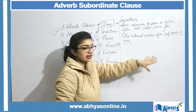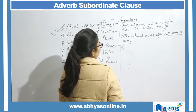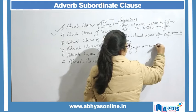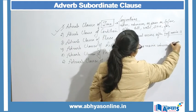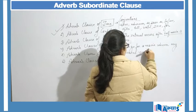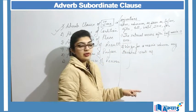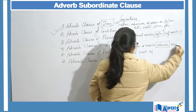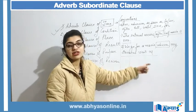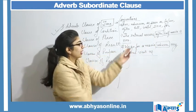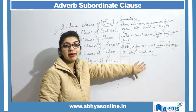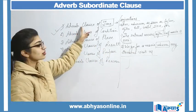Another example is: 'we go for a movie whenever my cousins visit us.' This is again a clause because it contains a subject, a predicate, and a verb as well. These clauses represent time, so they are adverb clauses of time. Next we are going to study about the adverb clause of condition.